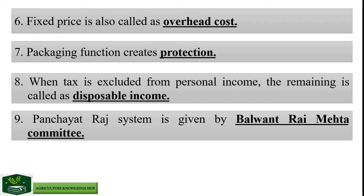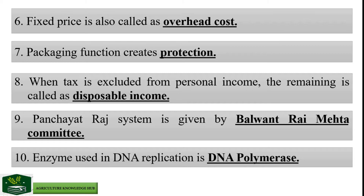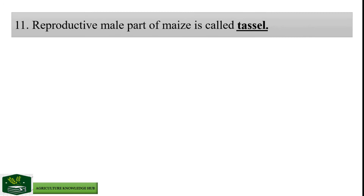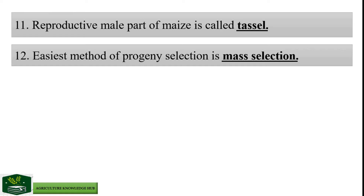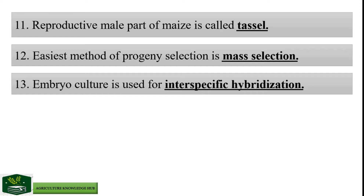Enzyme used in DNA replication is DNA polymerase. Reproductive male part of maize is called tassel. Easiest method of progeny selection is mass selection. Embryo culture is used for inter-specific hybridization.